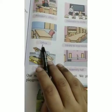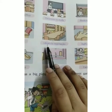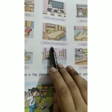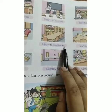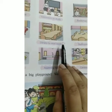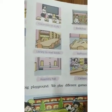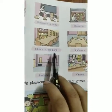Office — O-F-F-I-C-E. This is also in our school — office room. Library — L-I-B-R-A-R-Y — library to read books. This is also in our school. Our school library is very big.